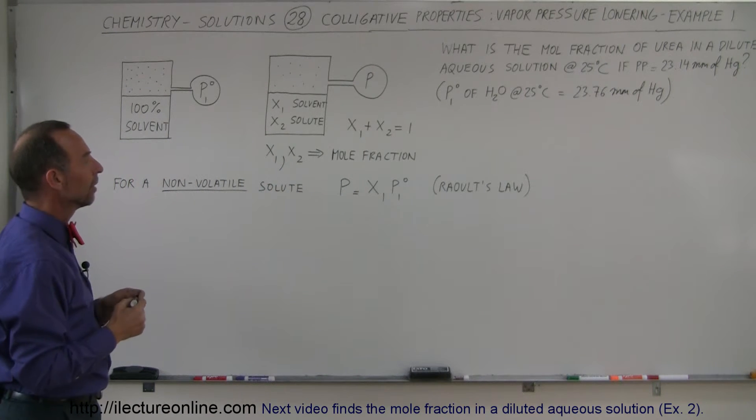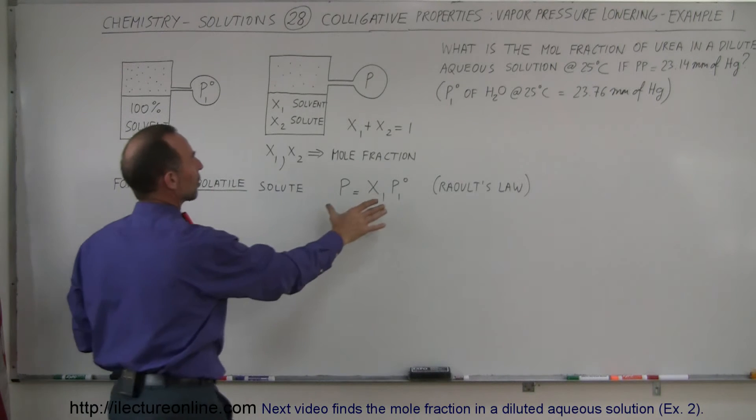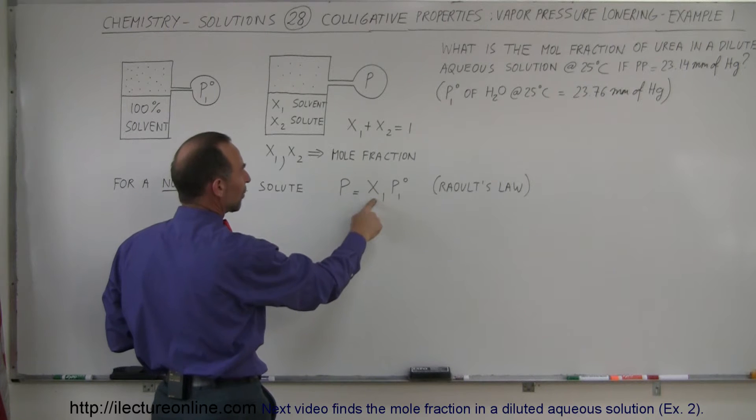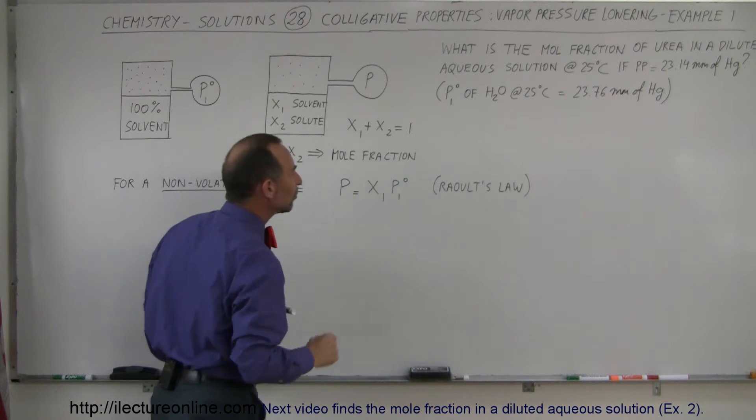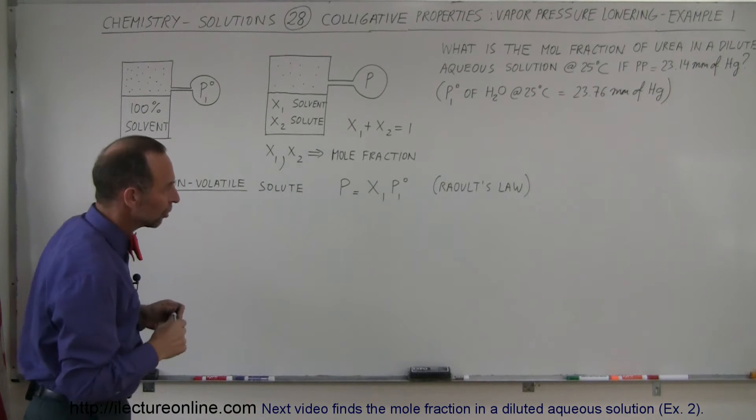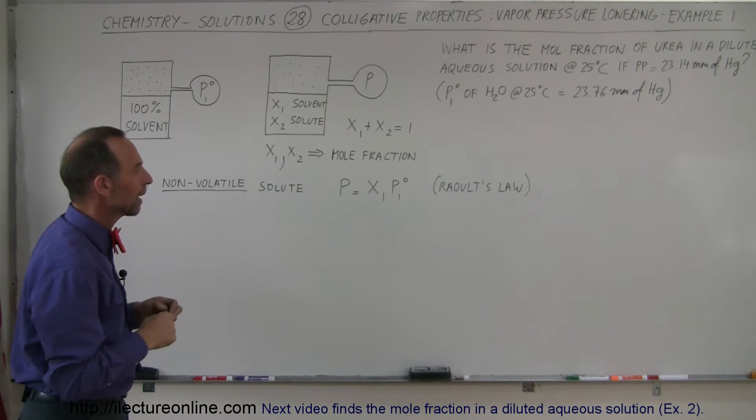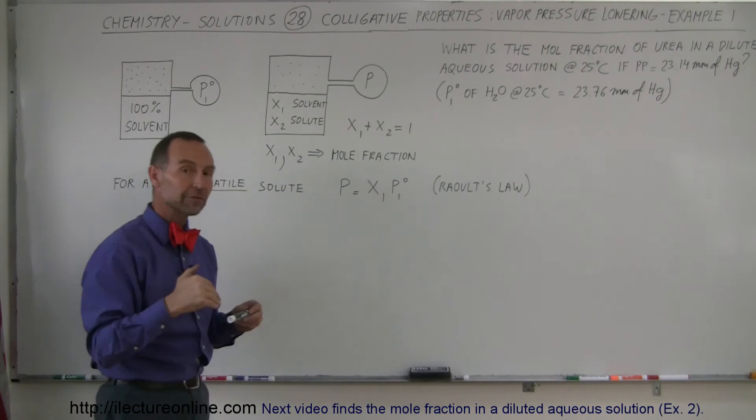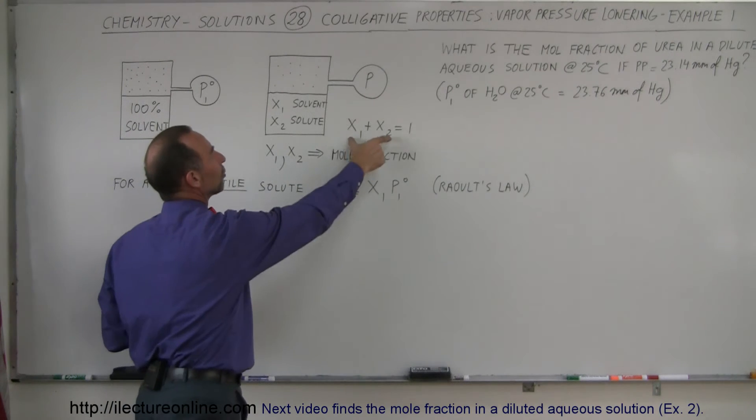So what we do here is we go to our basic equation that the pressure of the solution is equal to the mole fraction of the solvent times the pressure, the vapor pressure of the solvent by itself. So we're going to first figure out what the mole fraction of the solvent is, and from that, using this equation, we're going to figure out what the mole fraction of the solute is.